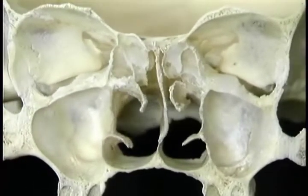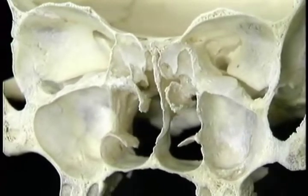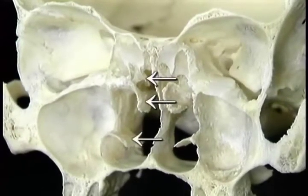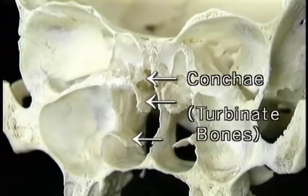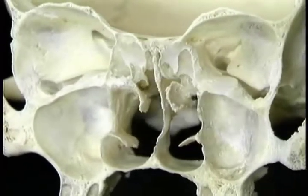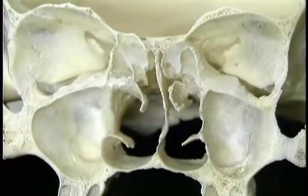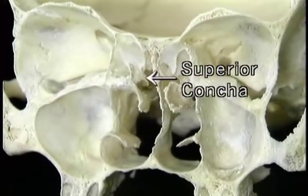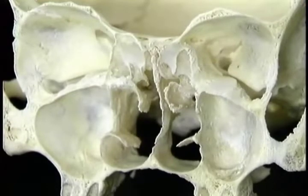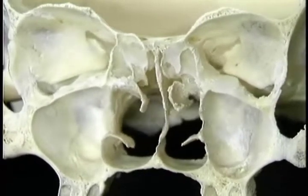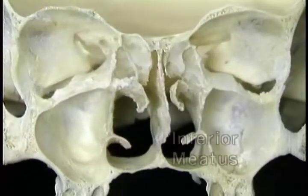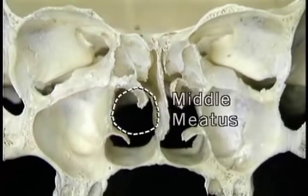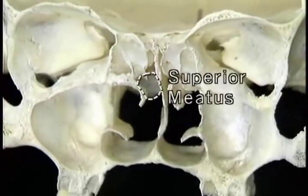By contrast, the lateral wall is marked by a number of features, most notably by these three delicate bony projections, the conchae — also known as the turbinate bones. This is the inferior concha, this is the middle concha, and this is the much smaller superior concha. The three conchae partially divide the air passage into three parts: the inferior meatus, the middle meatus, and the superior meatus.